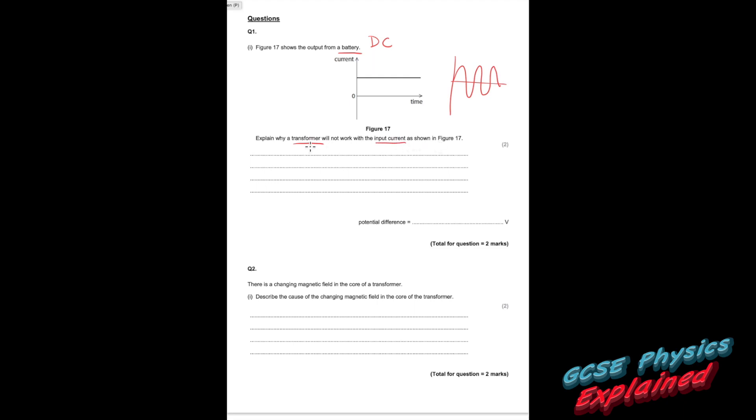Explain why a transformer will not work with the input current as shown. Well, transformers don't work with DC. They need AC, because an alternating current will produce a constantly alternating magnetic field. That's what transformers need.